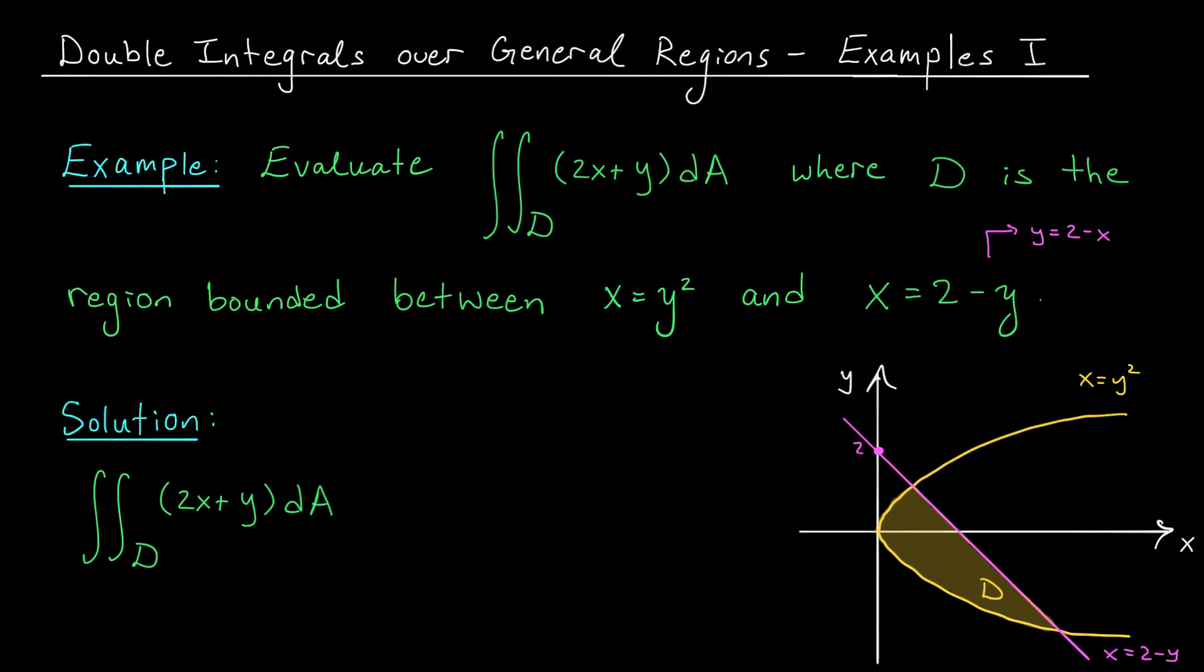on this part it looks like the parabola is the upper bound, but on this part it looks like the line is an upper bound, so it's not really bounded above and below in a nice way by functions of x.